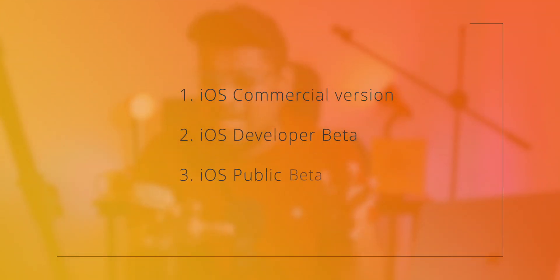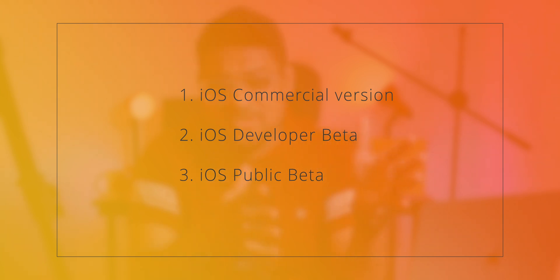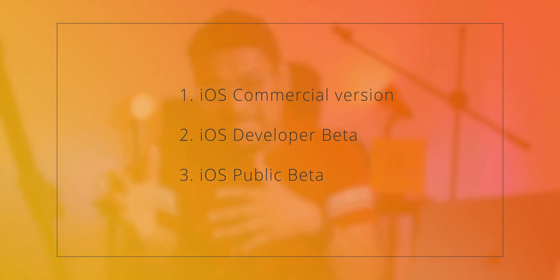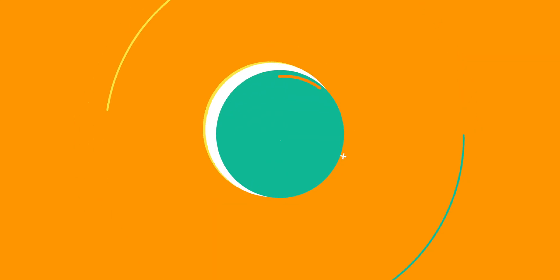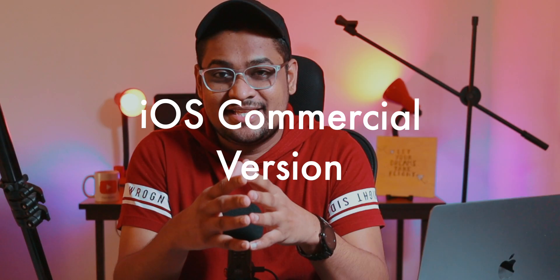There are three iOS softwares available: one is the iOS commercial version, then iOS developer beta, and then iOS public beta. Let's talk about each one.